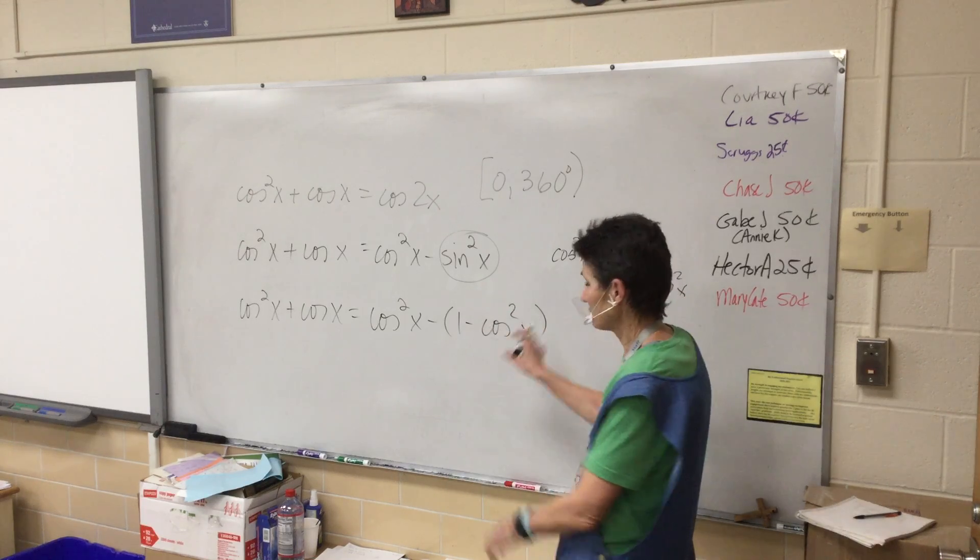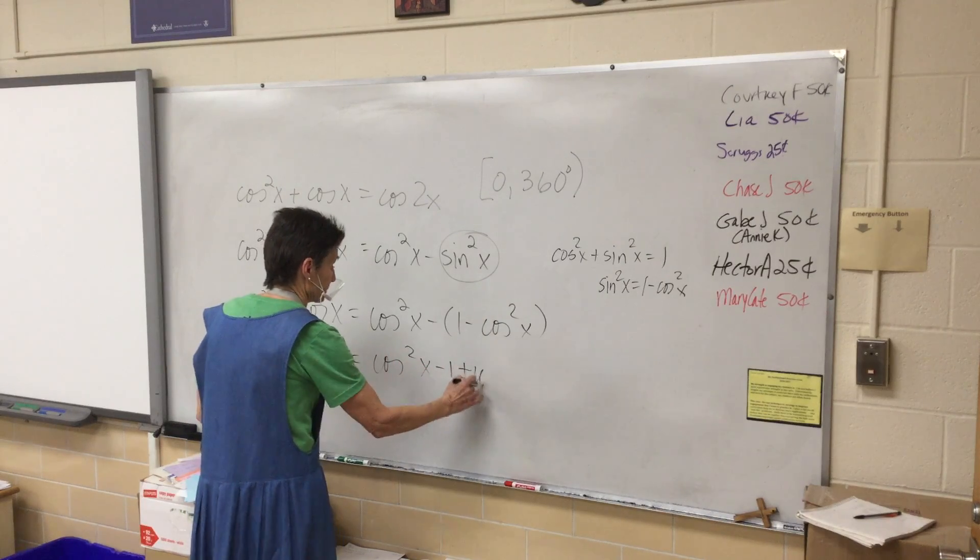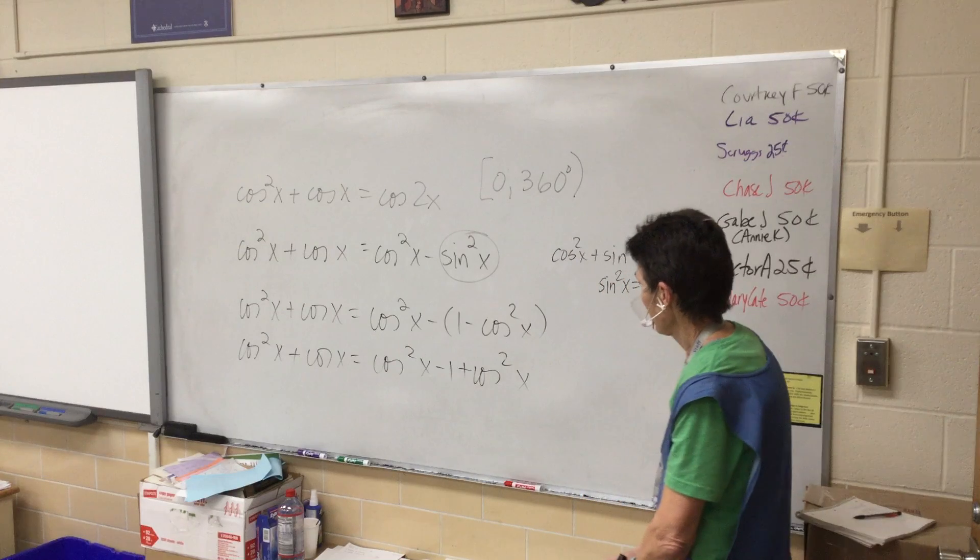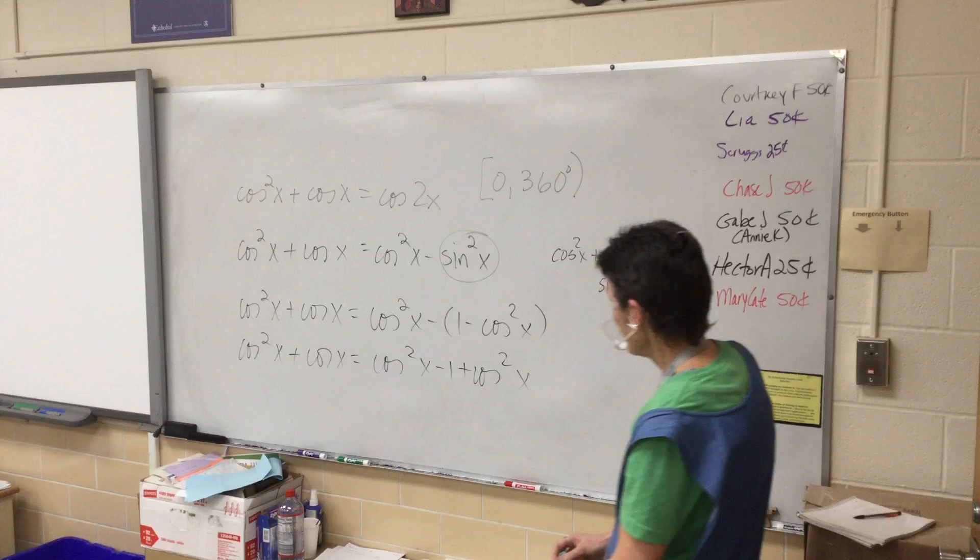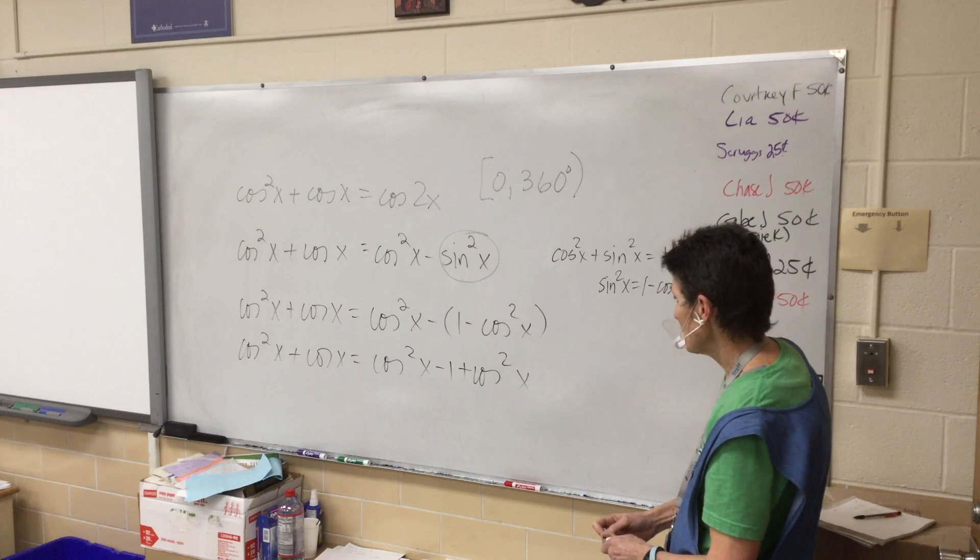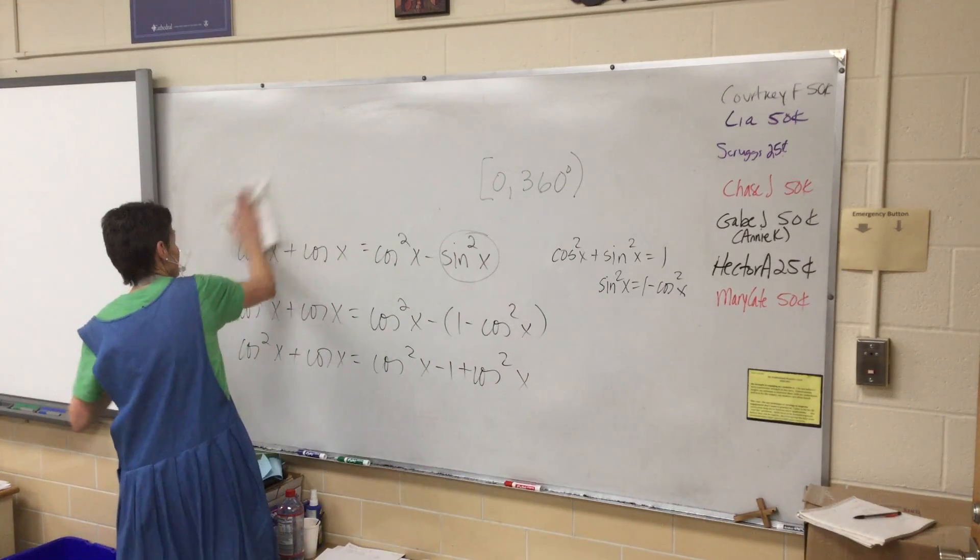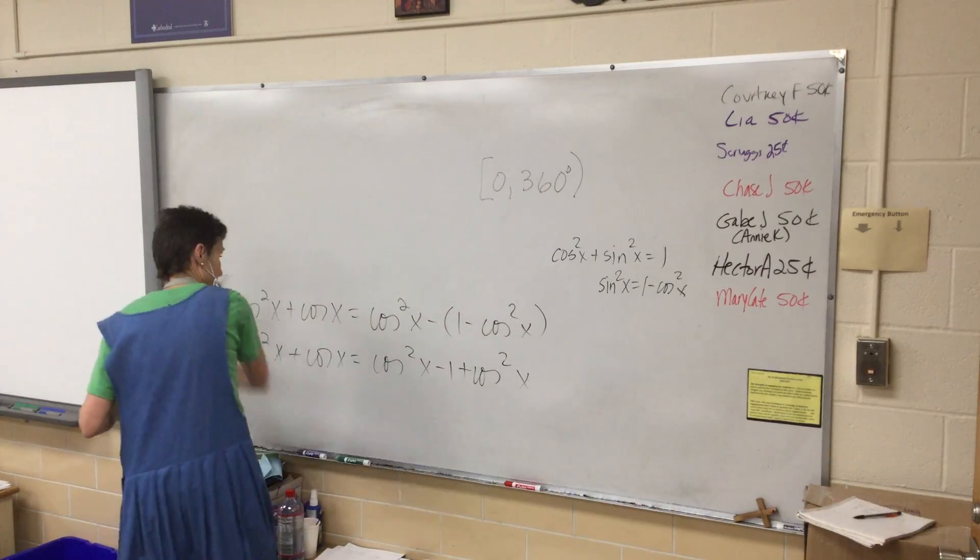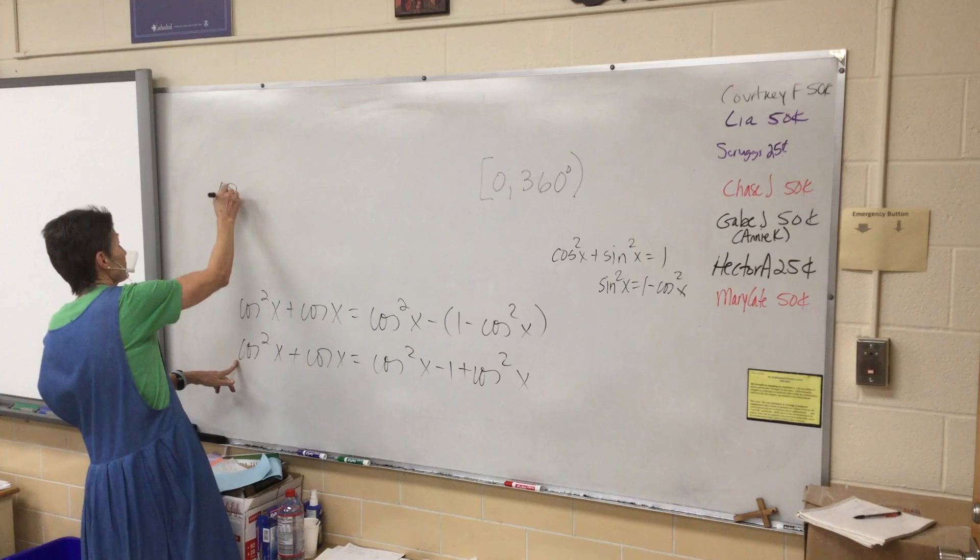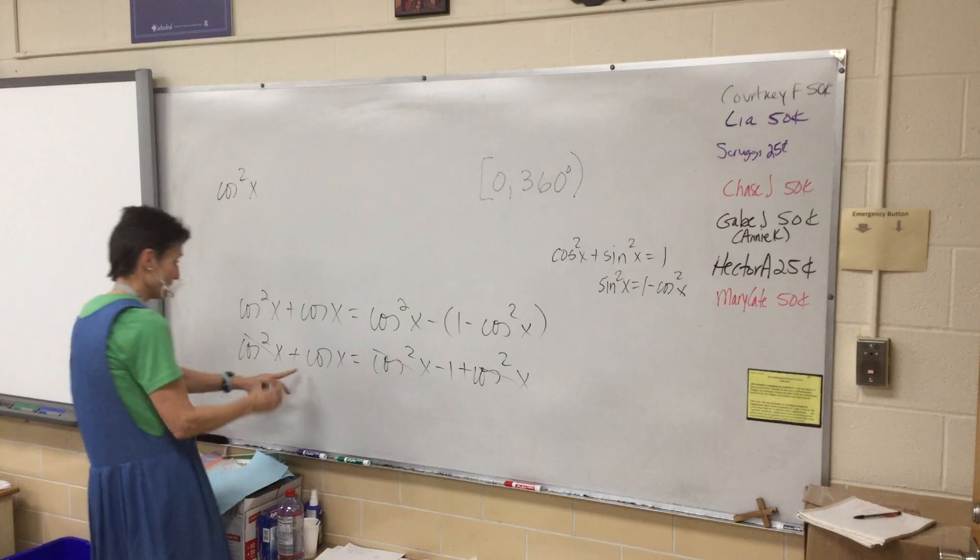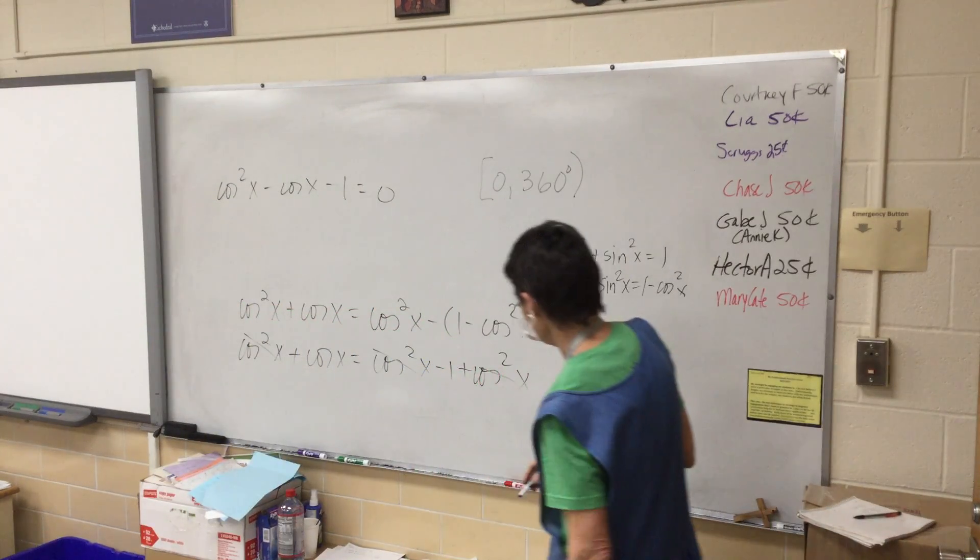So cosine squared plus cosine equals cosine squared minus 1 minus cosine squared. Let's clean things up. Do you see it's a quadratic equation? It's got squares in it. So why don't we get everything over on one side and set it equal to 0. I'll subtract cosine squared, subtract cosine, subtract the 1.